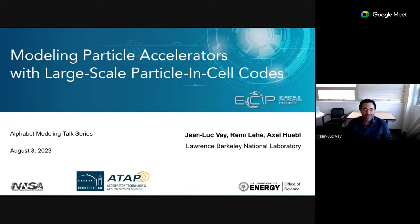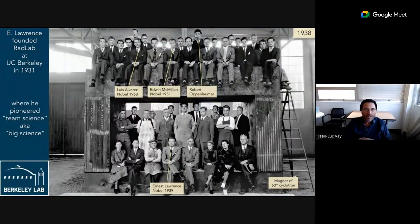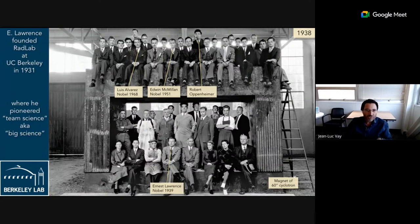Welcome everyone, and thanks for having us today. Berkeley Lab was founded by Lawrence in 1931. The rad lab became Berkeley Lab and is known for big science. You can see this picture from 1938 on top of a 60-inch cyclotron, which is a type of particle accelerator that Lawrence invented. He received the Nobel Prize in 1939 for this invention. You also see Edwin McMillan, who received his in 1951.